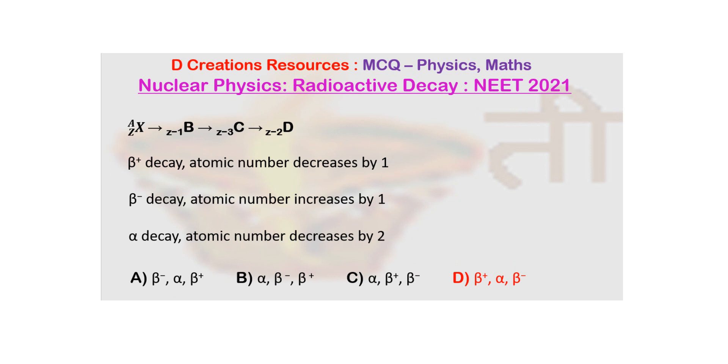So here you can see that if the decay is of beta plus, obviously the atomic number will decrease by 1. And in case of beta minus, it will increase by 1, while in case of alpha decay, the atomic number is going to decrease by 2.